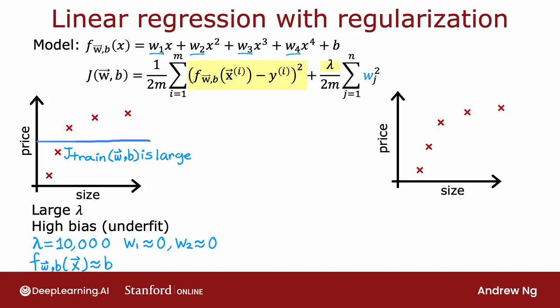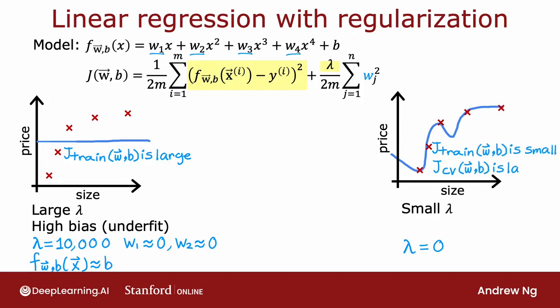Now let's look at the other extreme: setting lambda to a very small value, even lambda equals zero. With that choice, there is no regularization, and we're just fitting the fourth-order polynomial with no regularization. You end up with that wiggly curve that overfits the data. In this case, jtrain is small, but jcv is much larger than jtrain, indicating high variance — the model overfits the data.